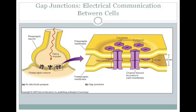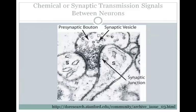In the last video, we talked about how an action potential is propagated down an axon. In some cells, this action potential can propagate to the next neuron through gap junctions, as shown here. These gap junctions allow electrical connectivity between two cells, so that current and ions can flow directly into the post-synaptic cell.